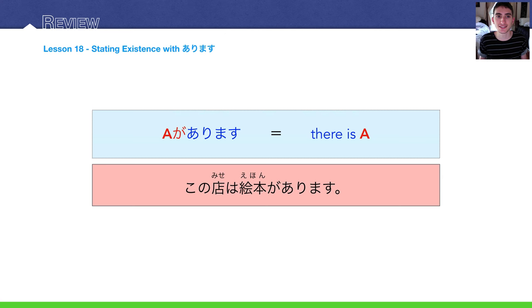Lesson 18, stating existence with arimasu. Remember, arimasu means to be, to exist, for inanimate objects. And then the thing that exists is marked by ga, the particle ga. E ga arimasu. There is an E, wherever.